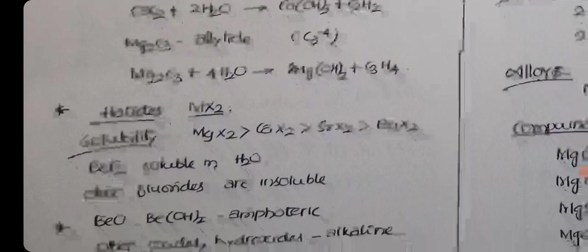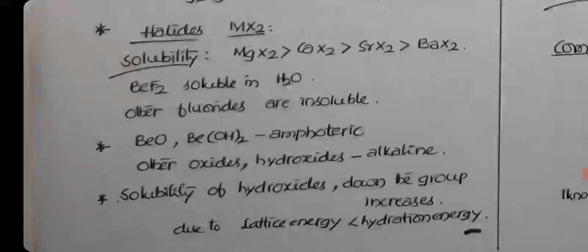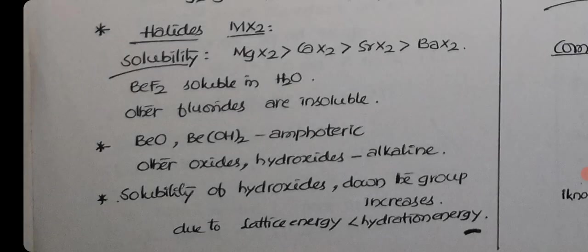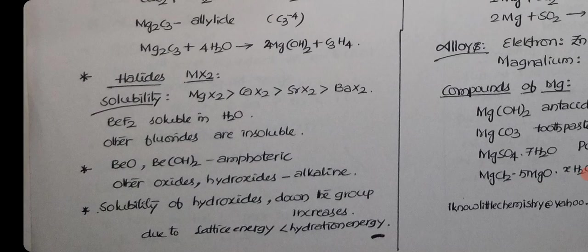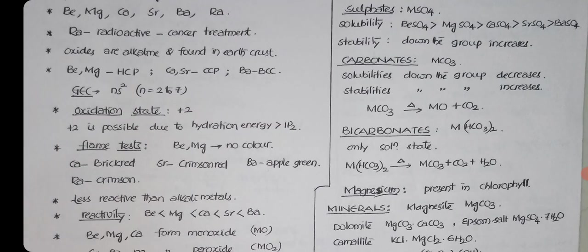Halides: MX2 type of halides are possible. Solubility: magnesium halides are more soluble than going down. Going down, ionic nature increases. BeF2 soluble in H2O, this is one important point. Other fluorides are insoluble. BeO and Be(OH)2 are amphoteric. Other oxides and hydroxides are alkaline. Solubility of hydroxides down the group increases. This is a very special point. More hydration energy is soluble, less hydration energy is less soluble.